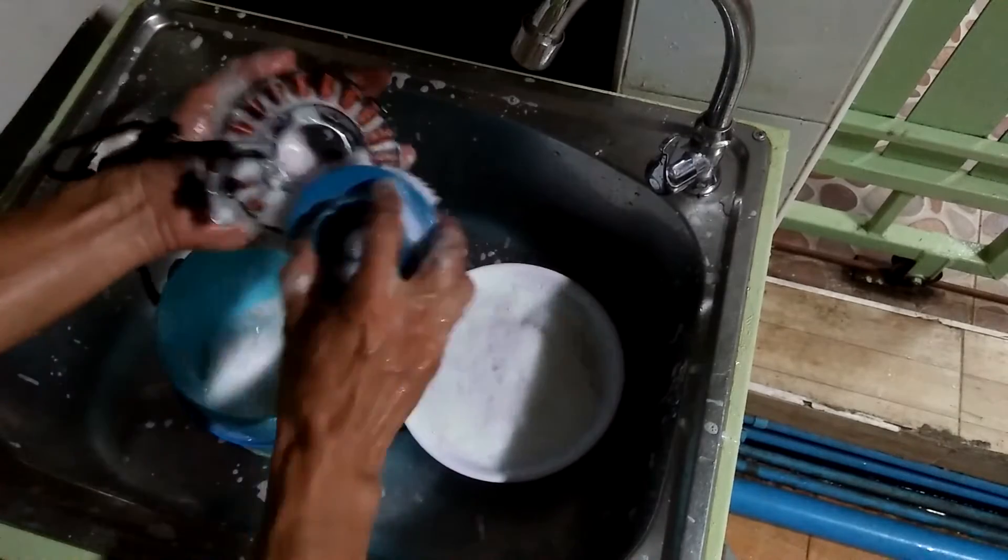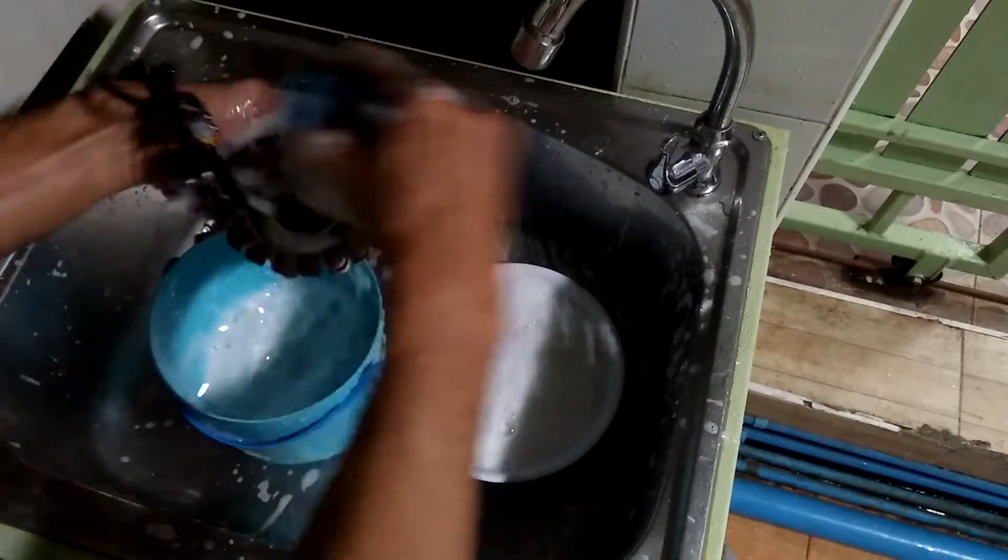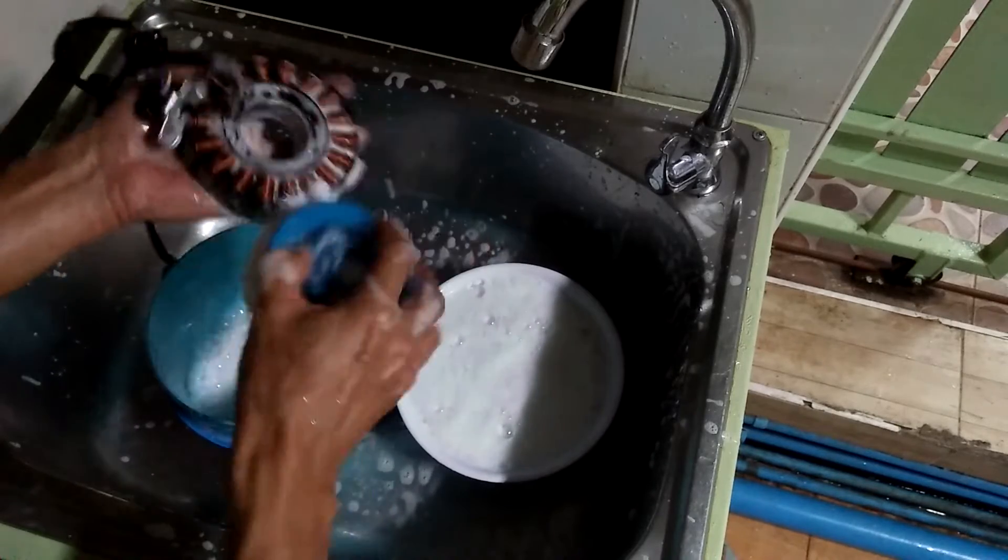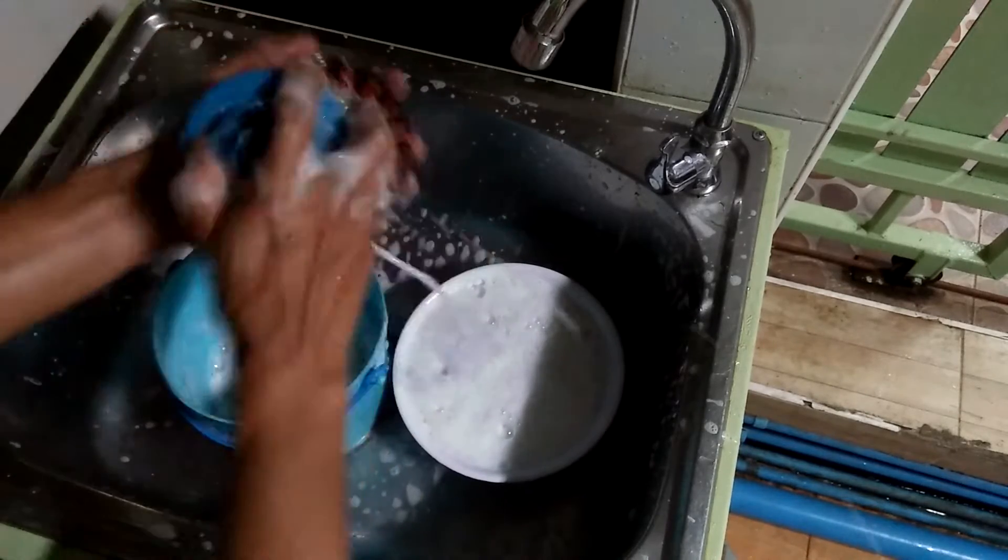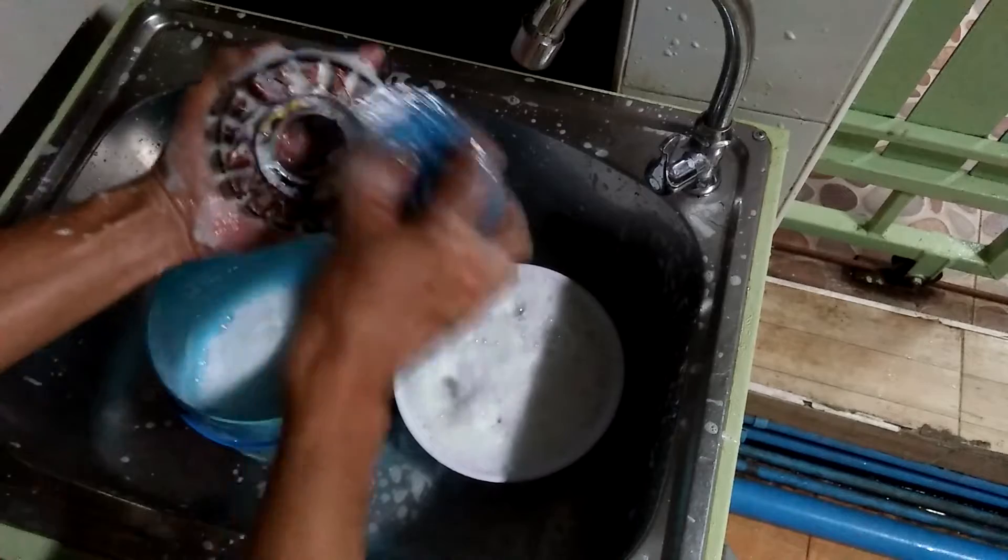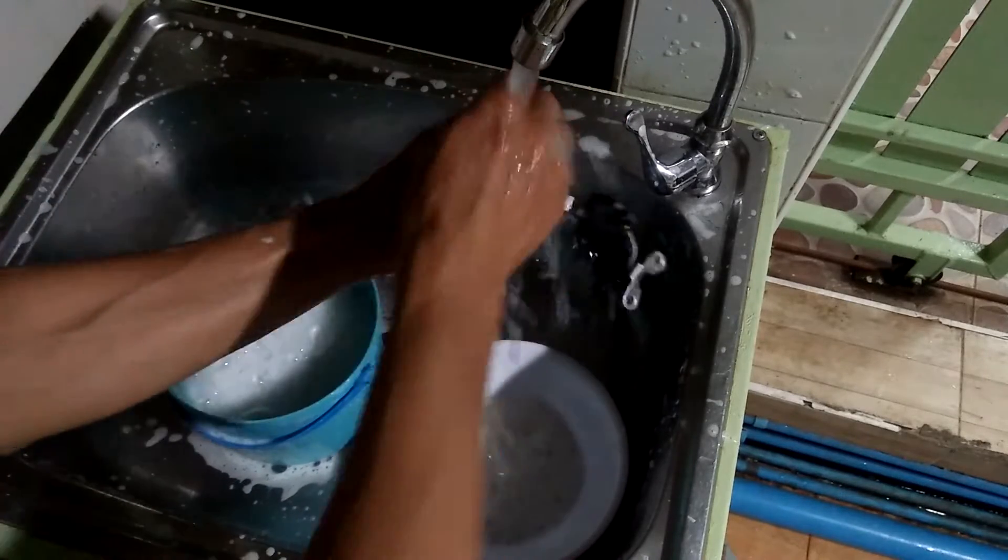After removing the stator out of the bike, the first thing I do is to wash it in detergent soap and water. I will be handling this part a lot and I don't want my hands to get very oily.